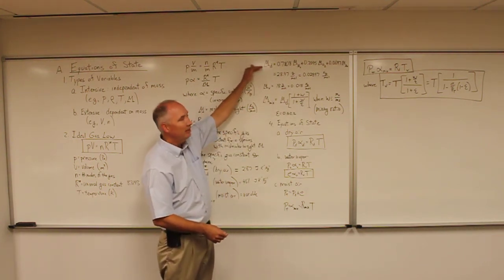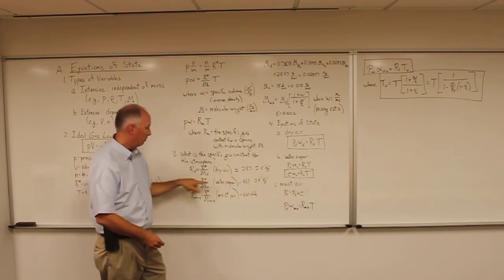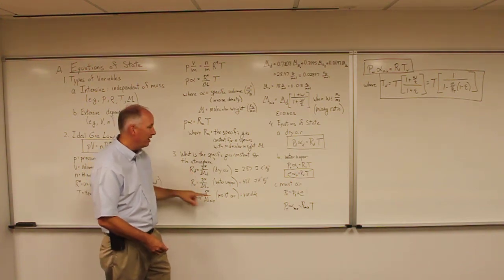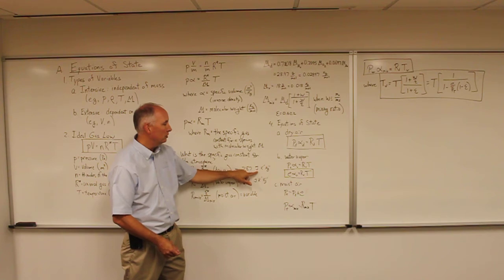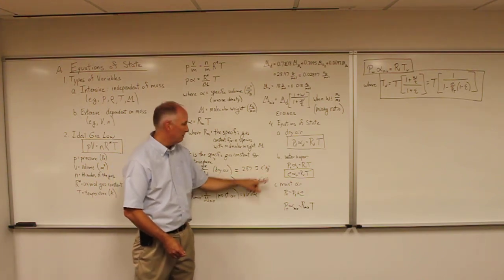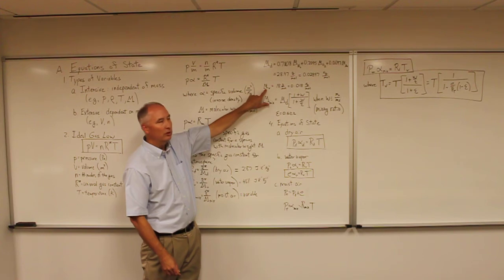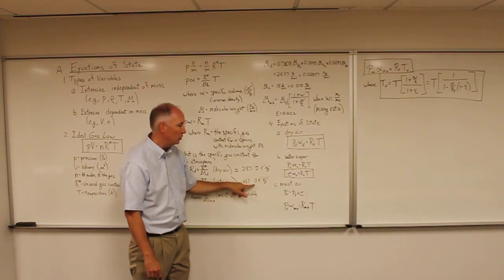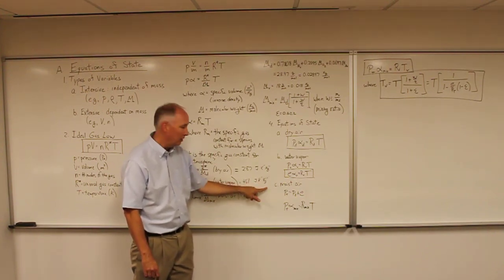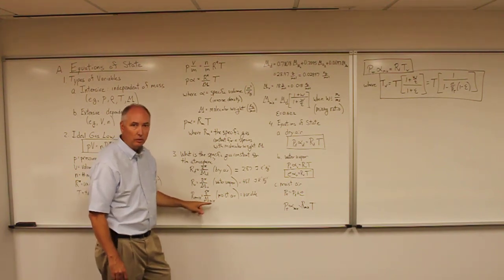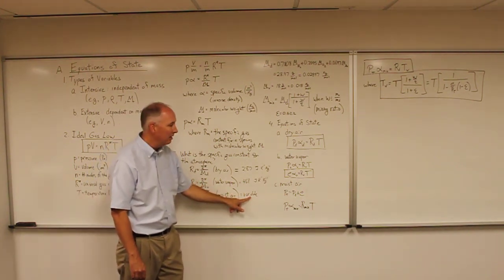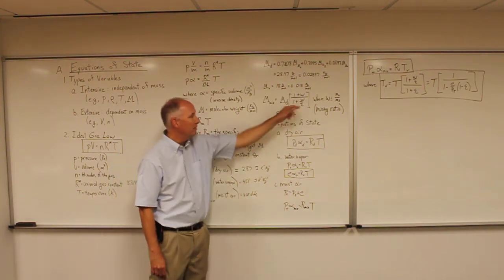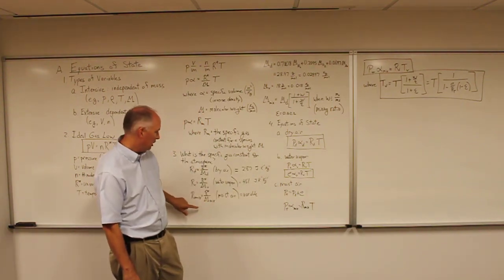Using the molecular weight for dry air, the specific gas constant for dry air is 287 joules per degree Kelvin per kilogram. For the molecular weight of water vapor, the specific gas constant is 461 joules per Kelvin per kilogram. For moist air, the specific gas constant is variable depending upon the amount of water vapor present, denoted by the mixing ratio — and we'll come back to that equation shortly.